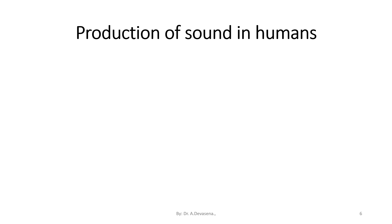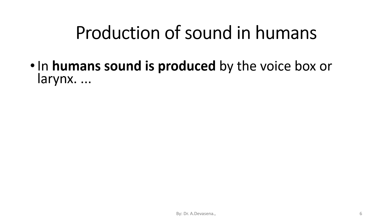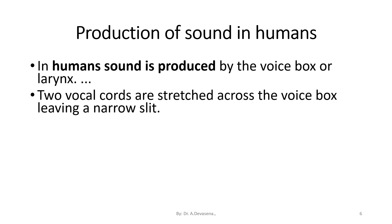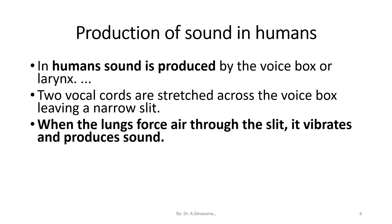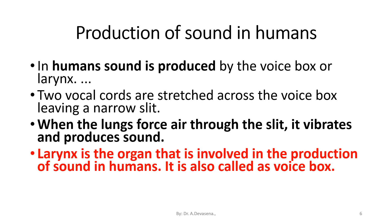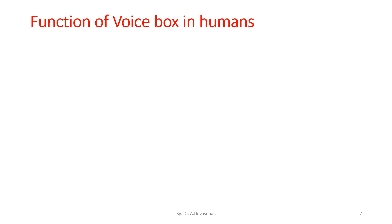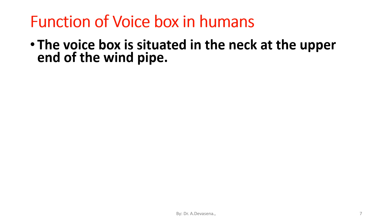Now let's see how sound is produced in human beings. In humans, sound is produced by the voice box or larynx. Two vocal cords are stretched across the voice box leaving a narrow slit. When the lungs force air through the slit, it vibrates and produces sound. The larynx is the organ involved in sound production in humans and is also called the voice box. It is situated in the neck at the upper end of the windpipe.